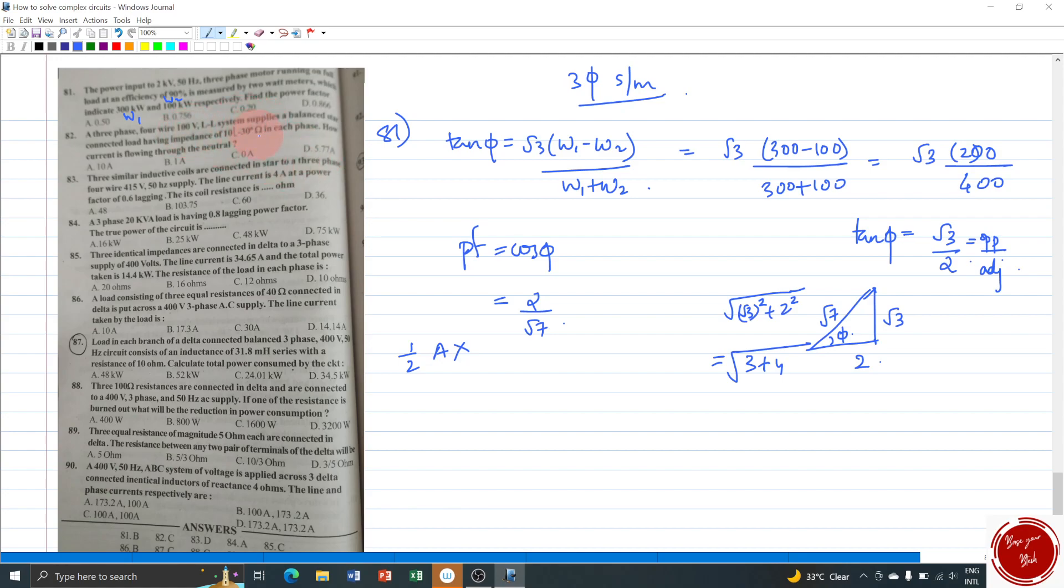Option B is 0.756. Let us keep it as pending. Option C is 0.2, 0.2 is 1 by 5. So option C can also be eliminated. And option D is 0.866. That decimal value is very much familiar. That is root 3 by 2 is 0.866. It is not our fraction is 2 by root 7. So option D also can be eliminated. Thus option B is your right answer. You can verify here. Answers are given in the bottom.